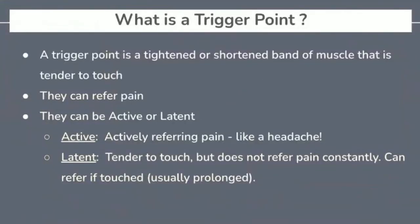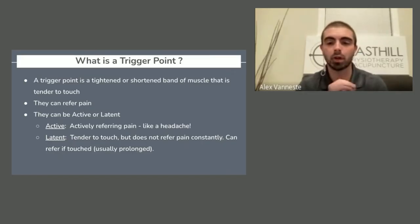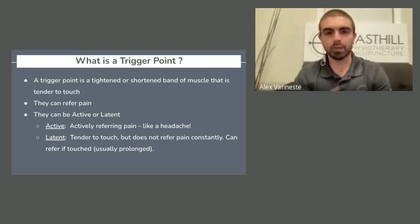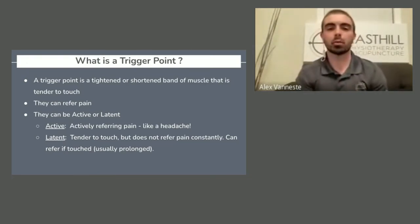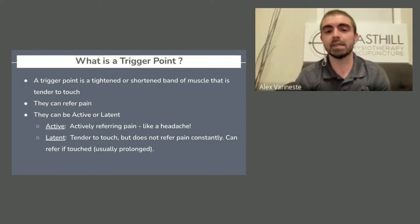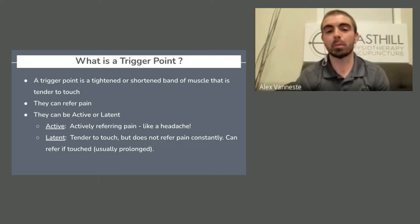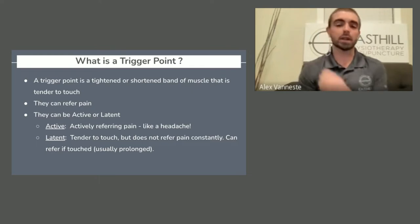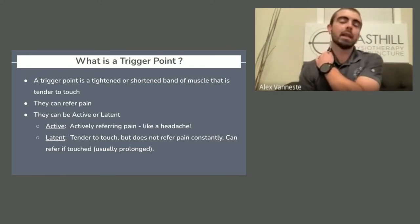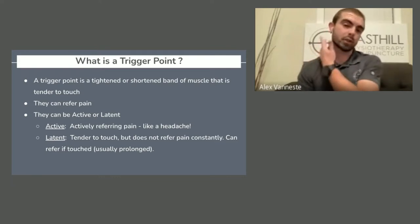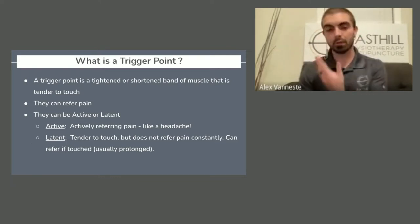So what is a trigger point? A trigger point is a tightened or shortened band of muscle that is tender to touch — what people may call a knot. If you poke around and feel something that doesn't feel so good, that's a trigger point. A trigger point can refer pain and can be active or latent. An active trigger point actively refers pain, like a headache — this is what we'd call the source of tension headaches. A latent trigger point is more tender to touch but doesn't refer pain constantly; it can refer pain if it's touched or held under pressure for a prolonged time.